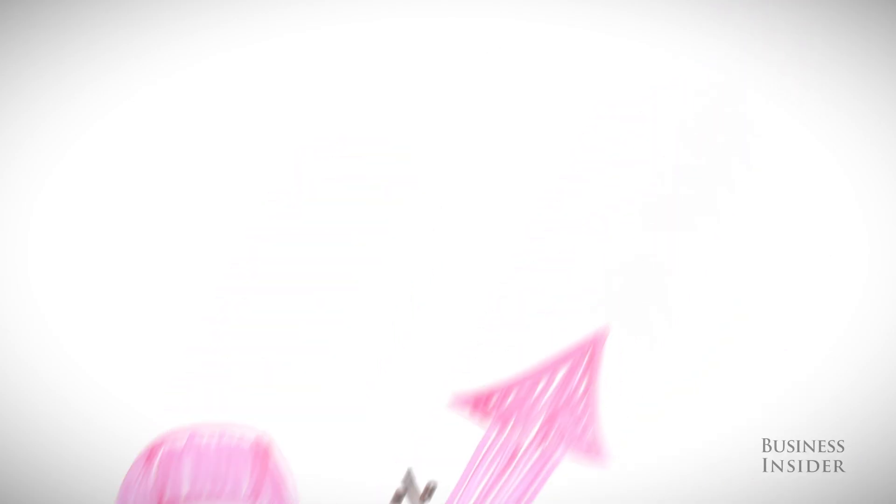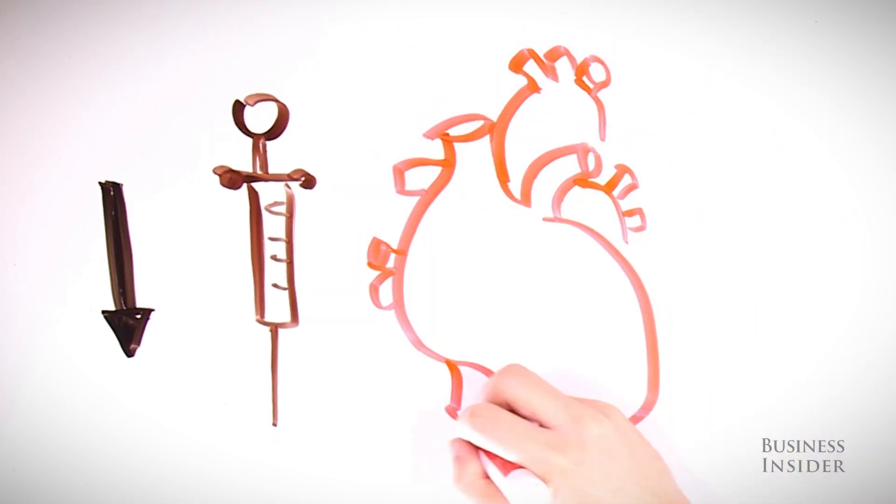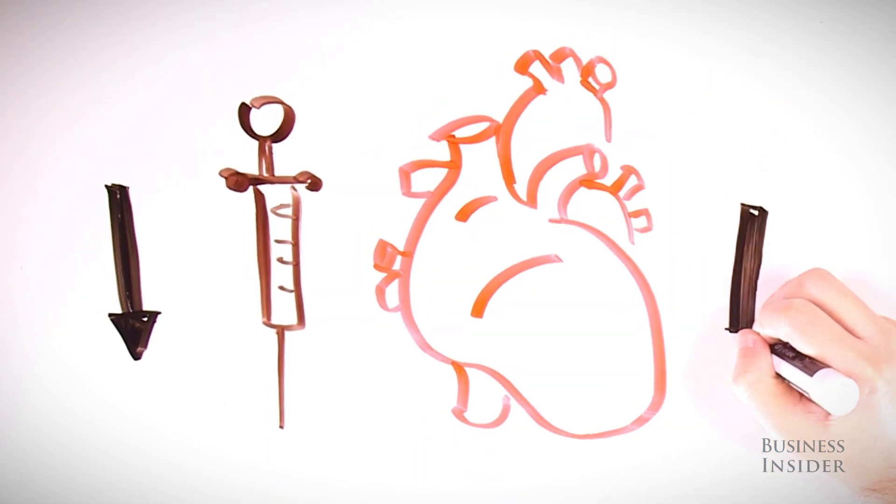And while a man may lower his risk of diabetes and heart disease by drinking two alcoholic beverages a day, a woman actually increases her risk of these diseases after her first drink.